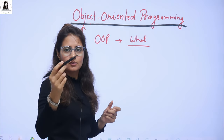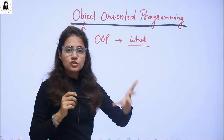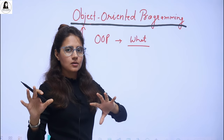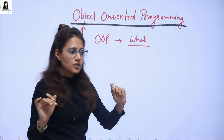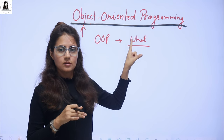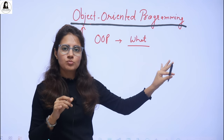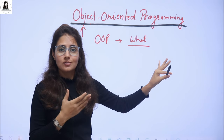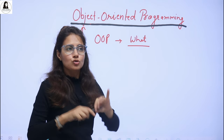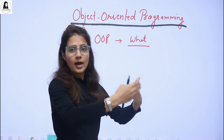These real world entities we can represent in programming with the help of the OOP approach. The same real world entities we can model in programming as objects. So we have the concept of objects, classes, and many other OOP concepts. Basically, the OOP approach is used to model real world scenarios in programming.